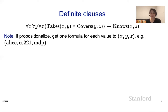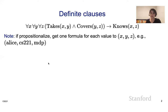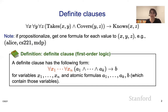If you propositionalize here, you get one formula for each value of x, y, and z. If you remember propositionalization from the last module, we can think about x, y, and z taking specific values like x being Alice, y being CS221, and z being MDP. Thinking of each formula taking one value for each x, y, and z, we end up with a propositional logic formula that turns out to be definite clauses. But we would like to represent this in this more expressive way using variables and quantifiers.